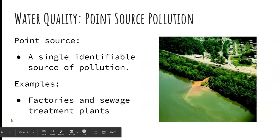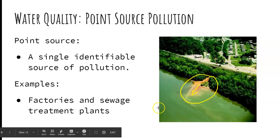A point source is a single identifiable source of pollution — you can see that in this picture, where there's one area where that pollution is going out into the waterway, perhaps from a factory or industrial use. Sewage plants are main sources of point source pollution, and once they're easily identified, restoration and monitoring can happen to improve water quality.